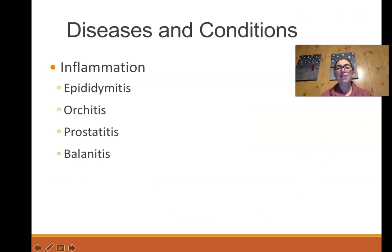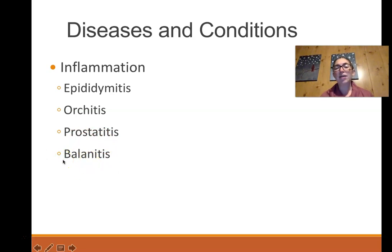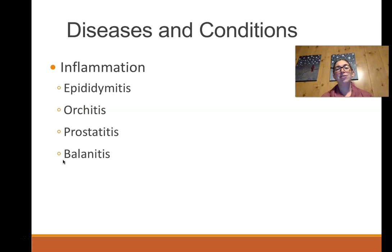Any infection or inflammation will carry the suffix -itis. Inflammation of the various parts of the male reproductive system includes: epididymitis — inflammation of the epididymis; orchitis — inflammation of the testes; prostatitis — inflammation of the prostate; and balanitis — balano is a combining form for penis. Another combining form for penis is phallo, spelled P-H-A-L-L-O. Things that have a penis-like shape are described as phallic.